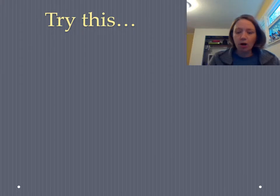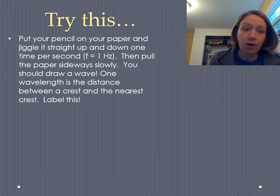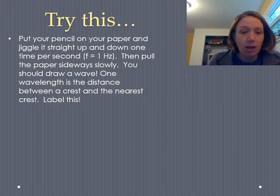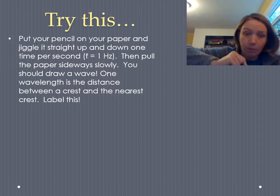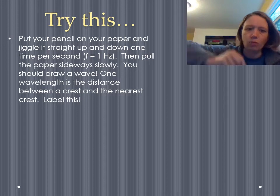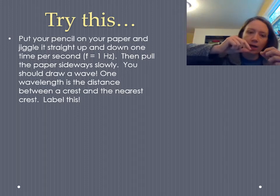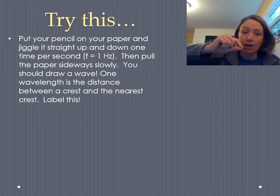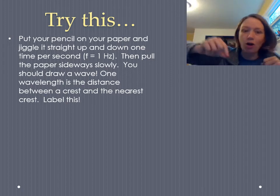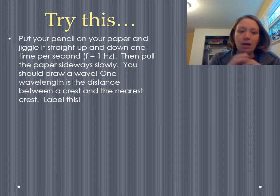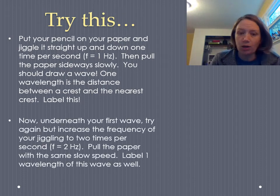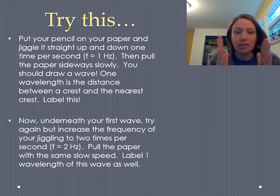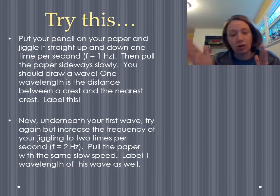So the first step, of course, is to figure out what are the relationships so we can figure out an equation. And I have a little bit of a demonstration that I would like you to try at home. So what you should do is you should put your pencil on your paper and you start jiggling it straight up and down about one time per second. So a frequency of one hertz. And while you're doing that, you're going to pull the paper sideways kind of slowly. This should cause you to draw a wave as the paper is going. And you can label on your wave the wavelength, which is the distance between a crest and the nearest crest.